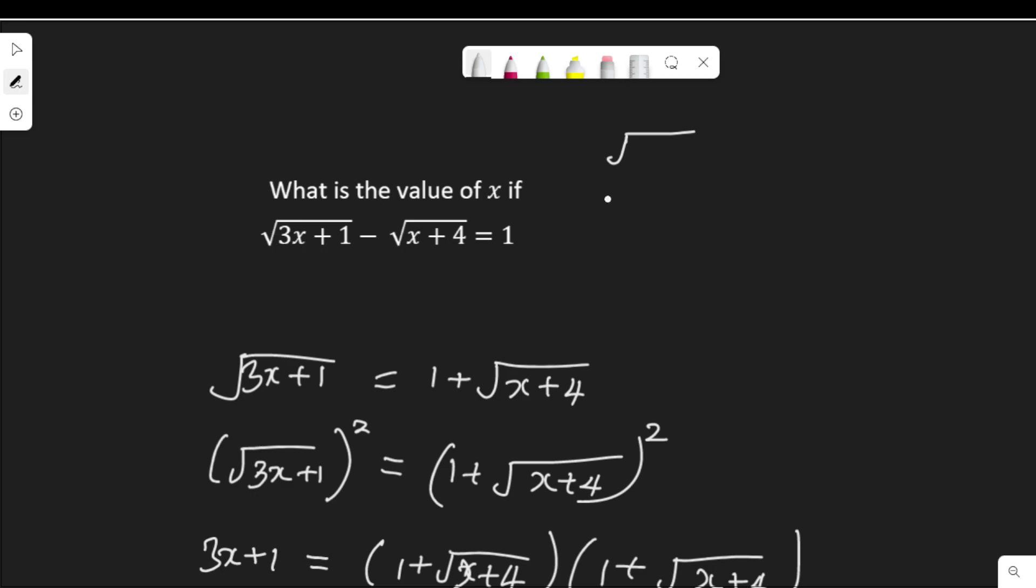Using x = 0, that would be √(3×0 + 1) - √(0 + 4). 3 times 0 is 0, 0 + 1 is 1, so √1 - √4. Square root of 1 is 1, 1 minus square root of 4 is 2. 1 - 2 is -1. So it's not equal to 1. That means 0 is not an answer. It doesn't satisfy the equation.